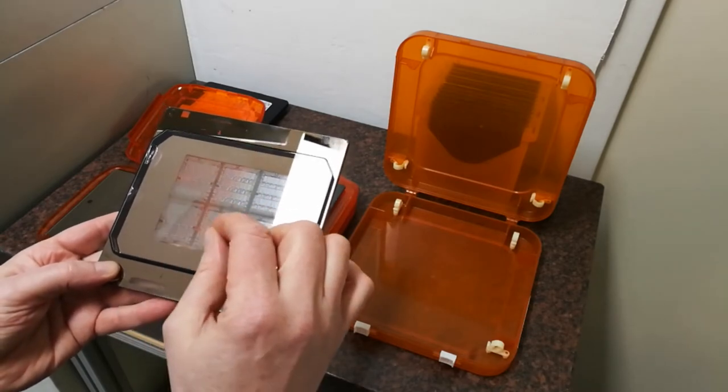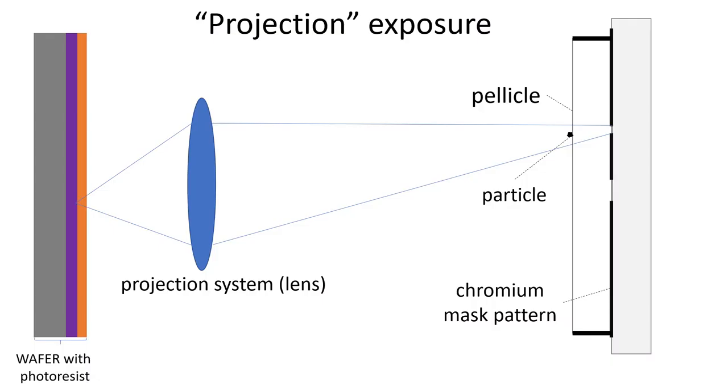Now you can imagine that if a particle lands on the pattern, this would immediately lead to a defect in the chip. But if you have a pellicle on top of that, then the particle would not land on the pattern, but it would land on the pellicle.